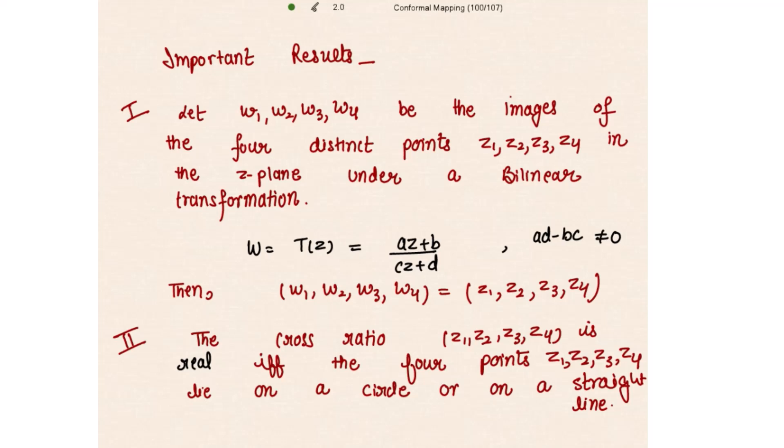The second result: the cross ratio (z1, z2, z3, z4) is real if and only if the four points z1, z2, z3, z4 lie on a circle or a straight line. So if a circle passes through these four points, the cross ratio is real. And if we take the transforms w1, w2, w3, w4 of these points, the cross ratios of both sets of points are equal, as stated in the first result. So the cross ratios become equal.